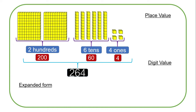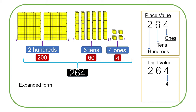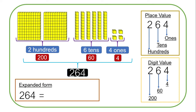Now let us look at the place values, digit values, and expanded form of the number 264. The place value of four is ones, the place value of six is tens, and the place value of two is hundreds. For the digit value: the digit value of four is four (four times one), the digit value of six is 60, and the digit value of two is 200. In expanded form it will be 200 plus 60 plus four.